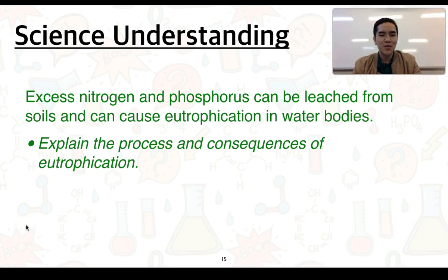Welcome back. This is part two of 4.3 soils. We're going to consider this science understanding: excess nitrogen and phosphorus can be leached from soils and can cause eutrophication in water bodies. You'll need to be able to explain the process and consequences of eutrophication.